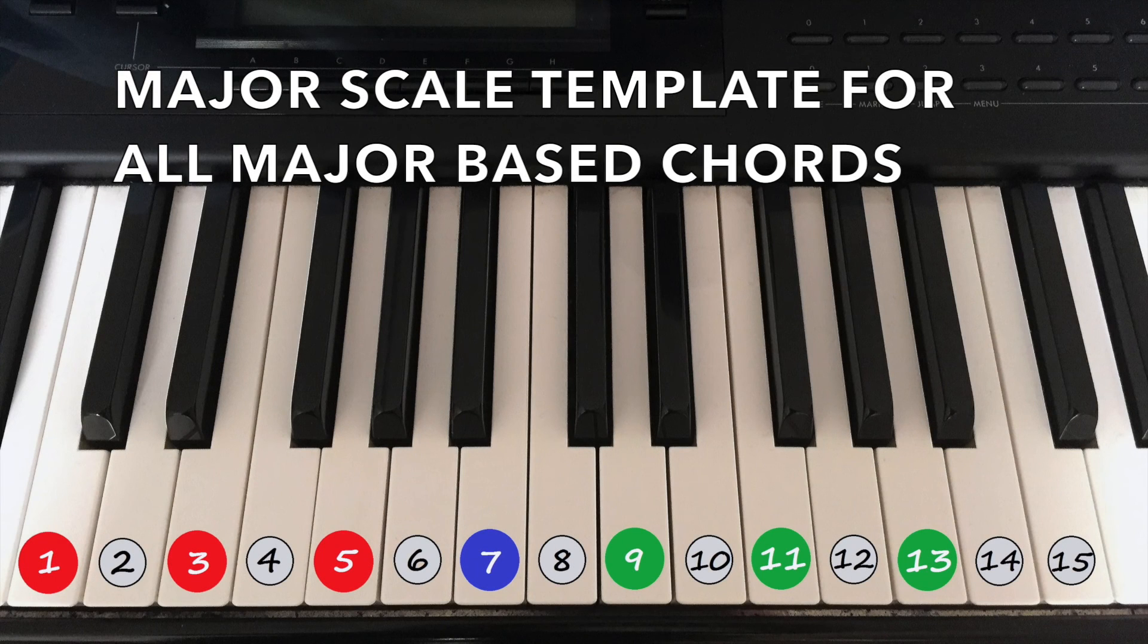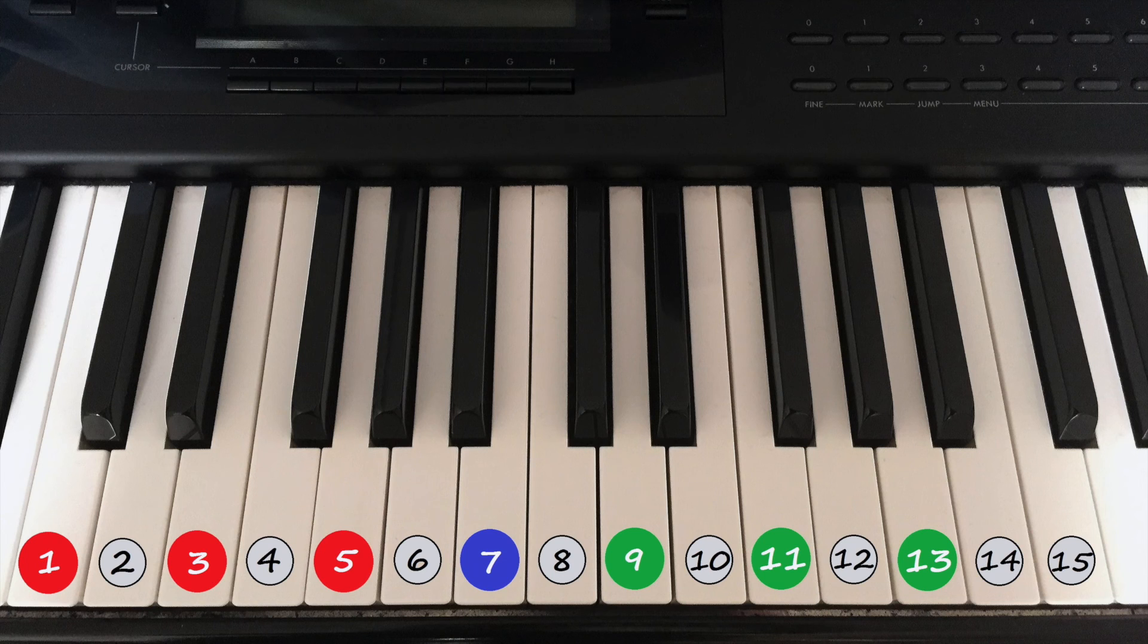The C major scale has been extended over a range of 2 octaves and acts as a template for all unaltered major bass chords. The red circles outline the major triad, while the blue and green circles show the triad's extensions.